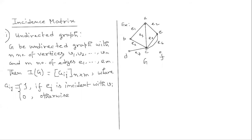Next we will look at incidence matrix. Let G be an undirected graph with n number of vertices V1, V2, ..., Vn and M number of edges E1, E2, ..., Em. The incidence matrix of graph G, denoted IG, is defined as a matrix of order N cross M, where each row corresponds to a particular vertex and each column corresponds to a particular edge. The entries Aij equal 1 if the jth edge Ej is incident with the ith vertex Vi, and 0 otherwise.